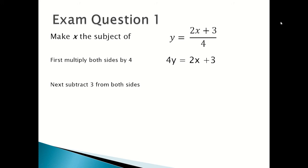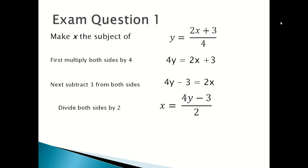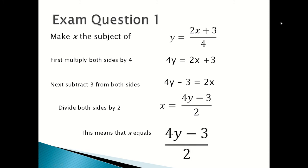Next you subtract 3 from both sides to get 4y minus 3 equals 2x, and then you divide both sides by 2 to get x equals 4y minus 3 over 2.